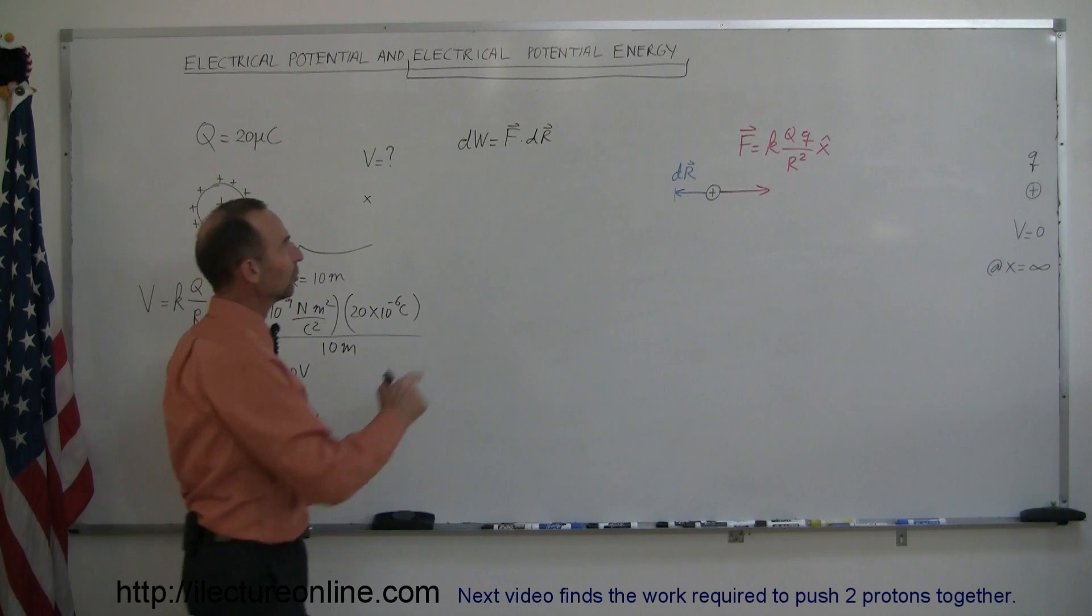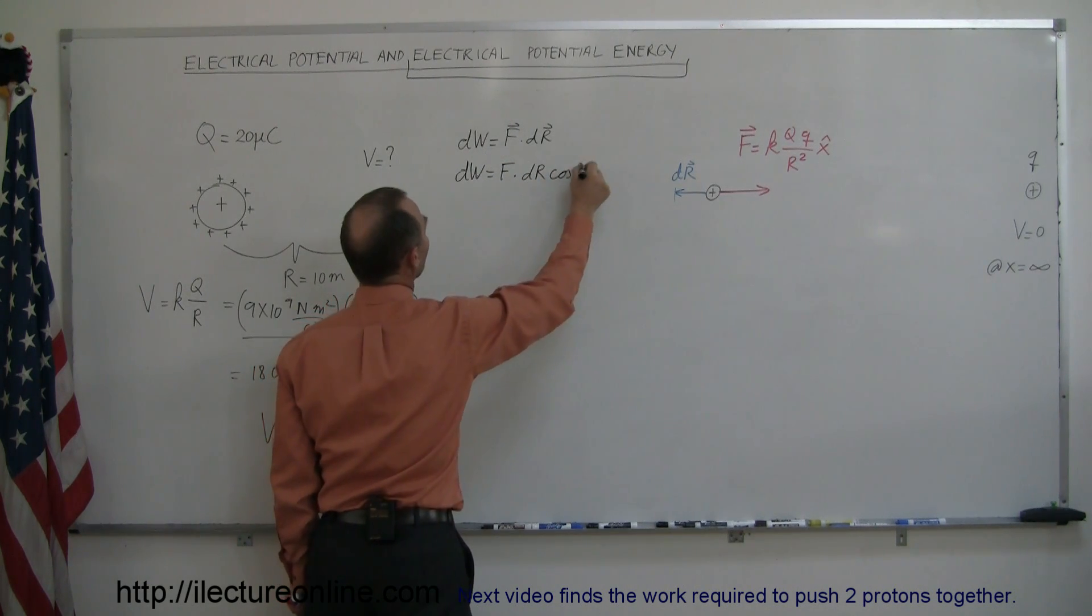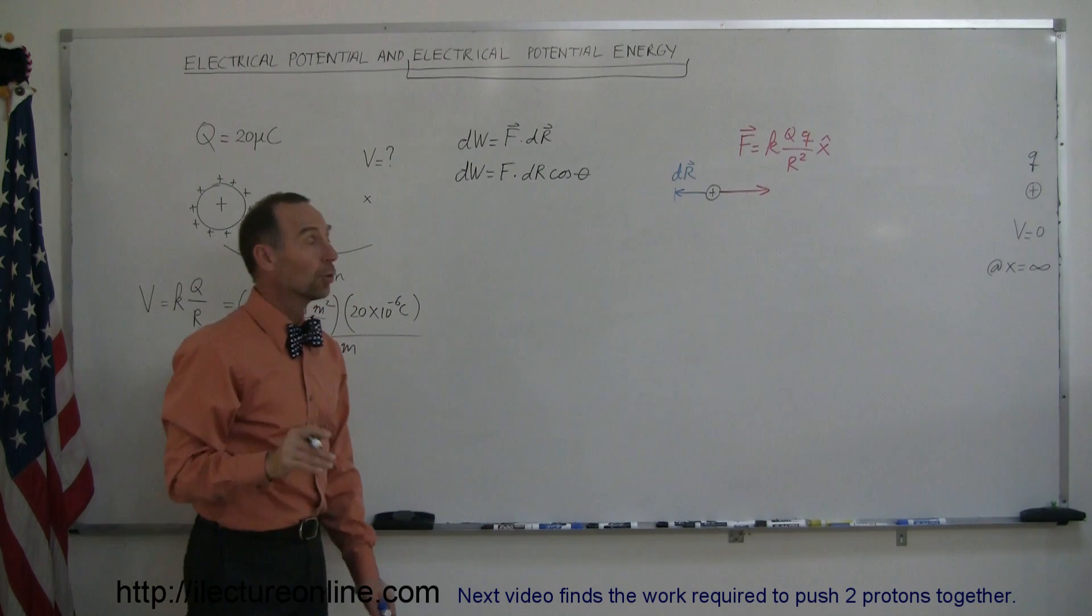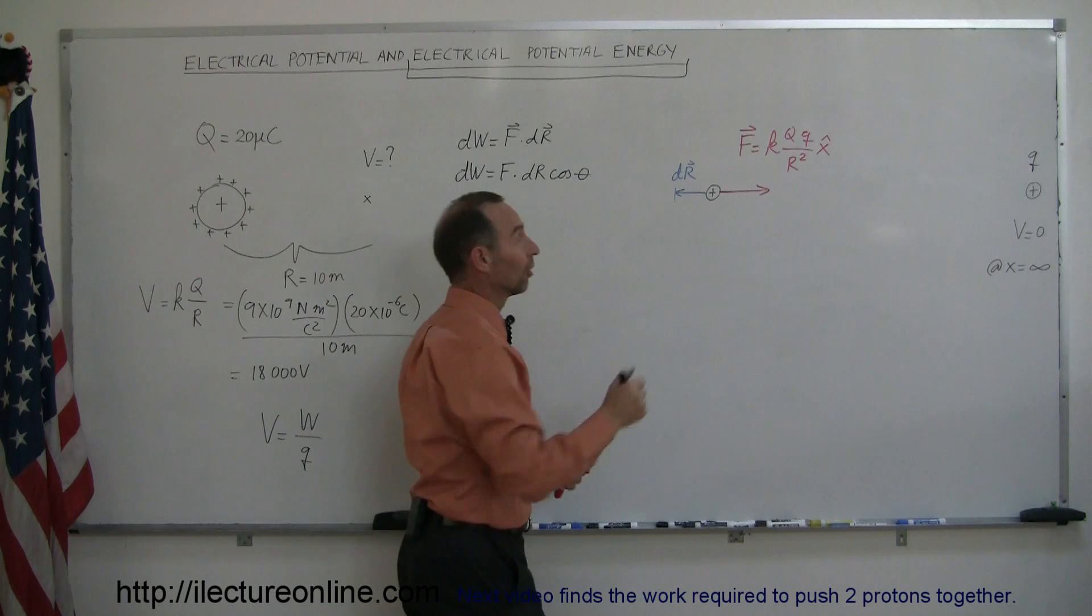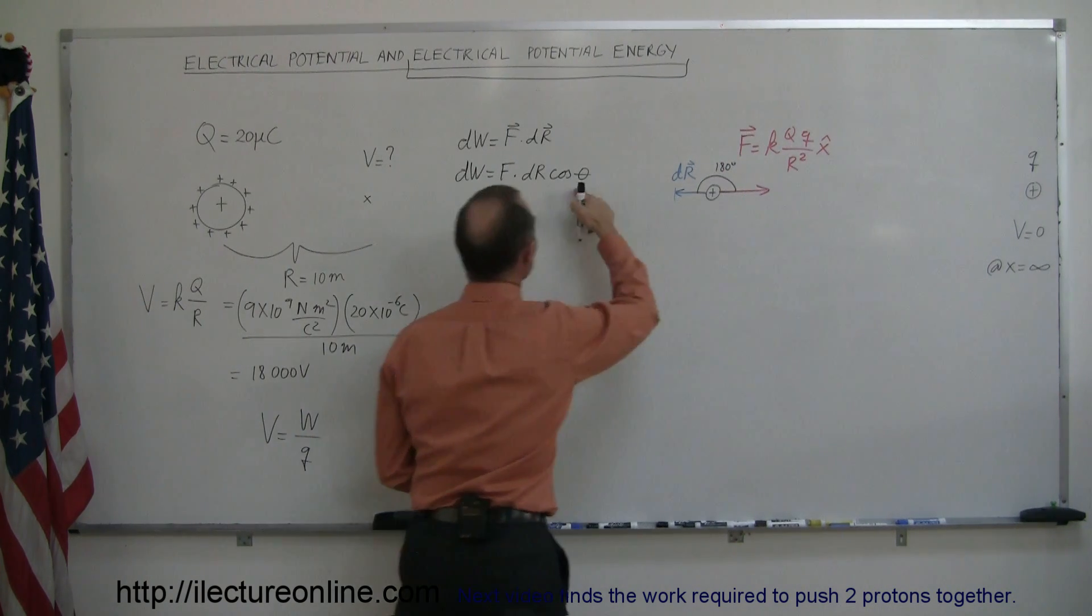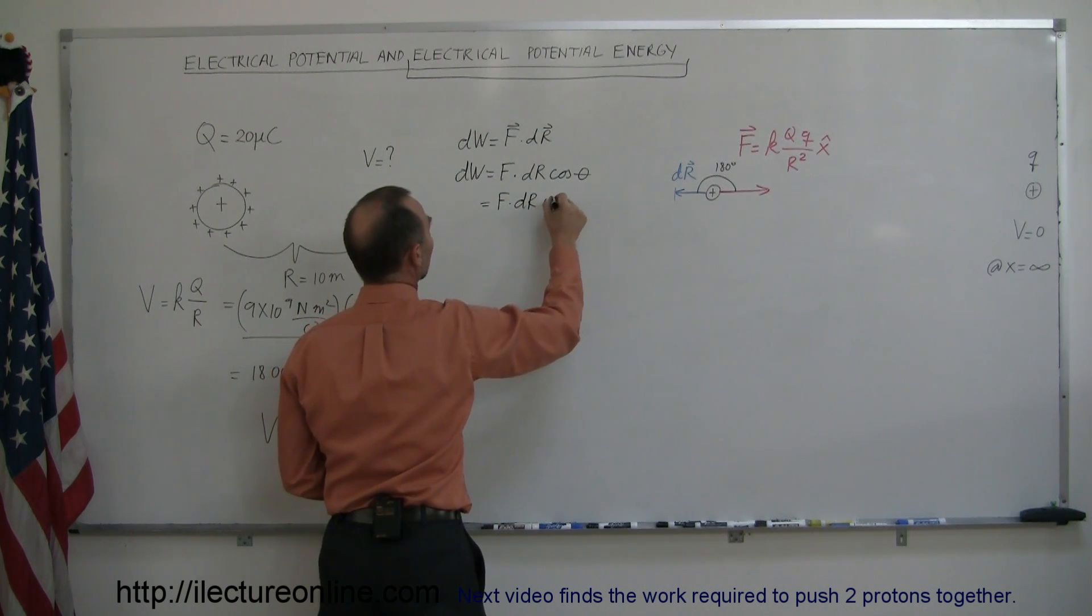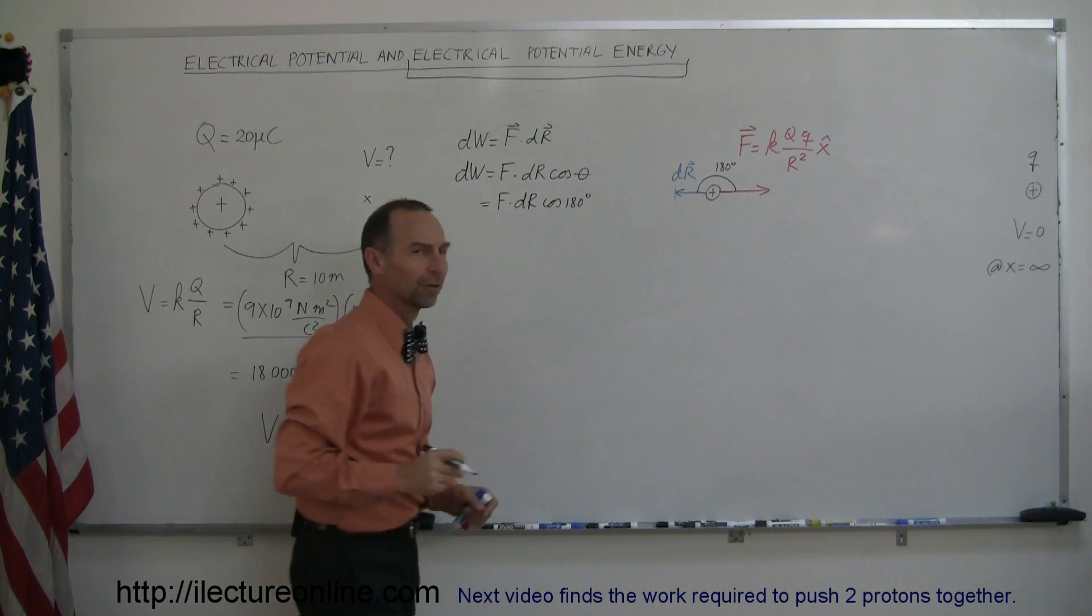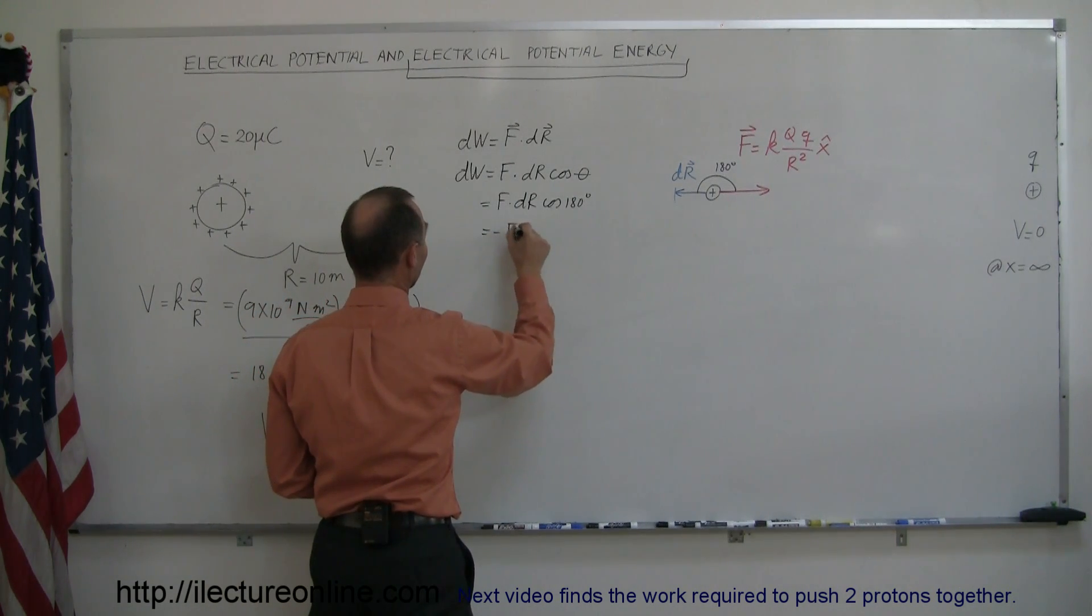The definition of F dot dr, that's a dot product, dw is equal to F, the magnitude of the force, times the magnitude of dr, times the cosine of the angle between the two. Now notice that the force is directed to the right, and the displacement is directed to the left, so we have an angle of 180 degrees between the two, and that means that this is equal to the force times dr times the cosine of 180 degrees, and of course the cosine of 180 degrees is equal to negative one, so this is equal to minus F dr.